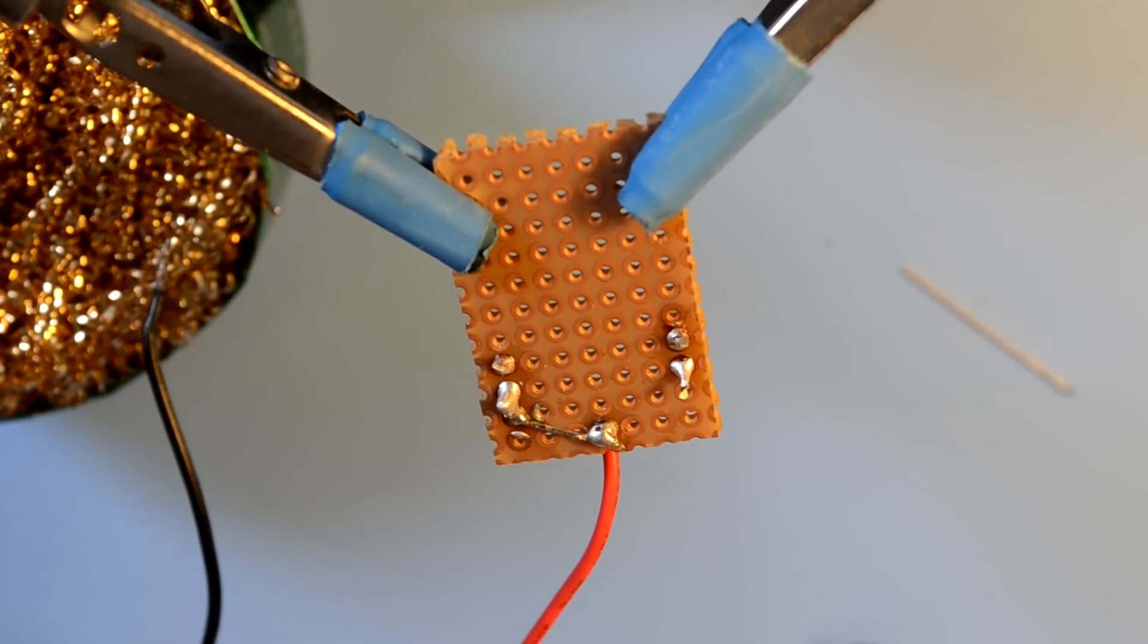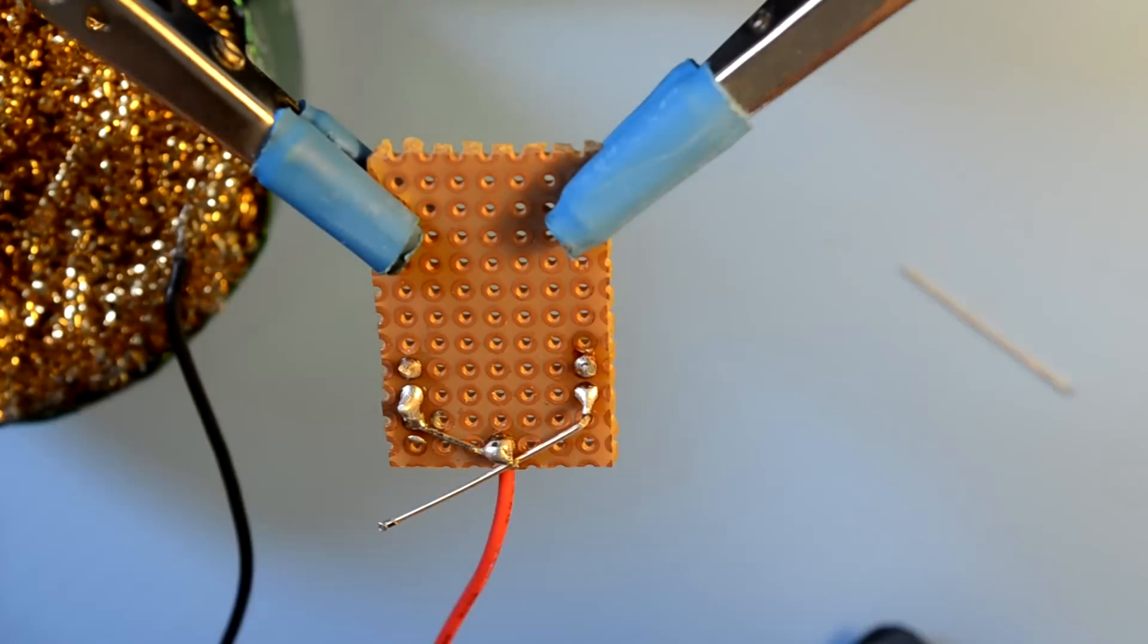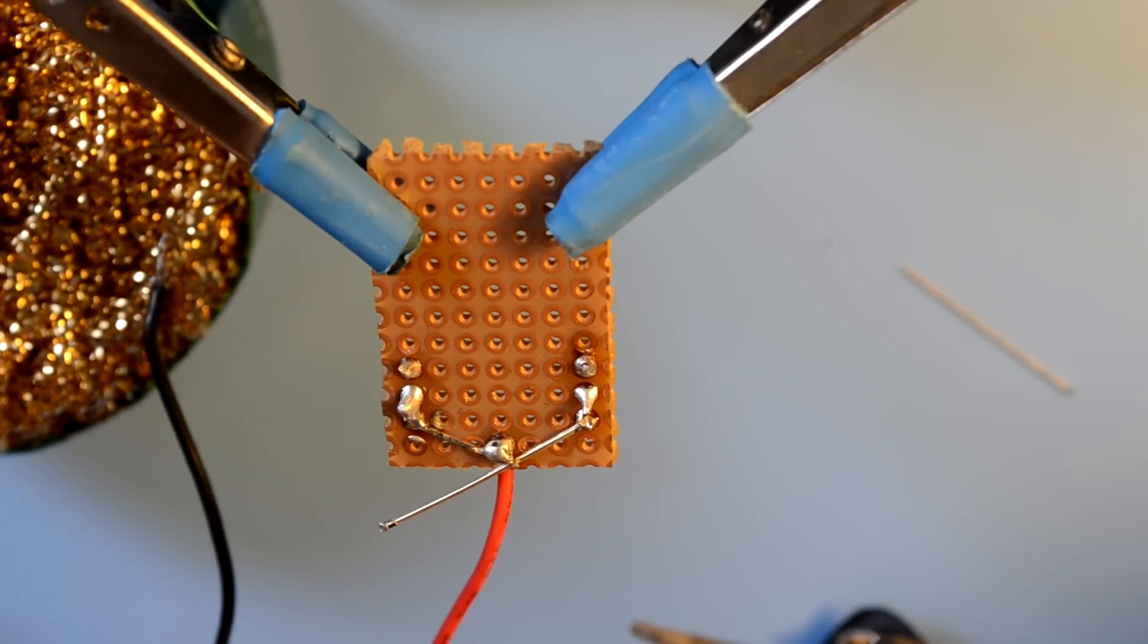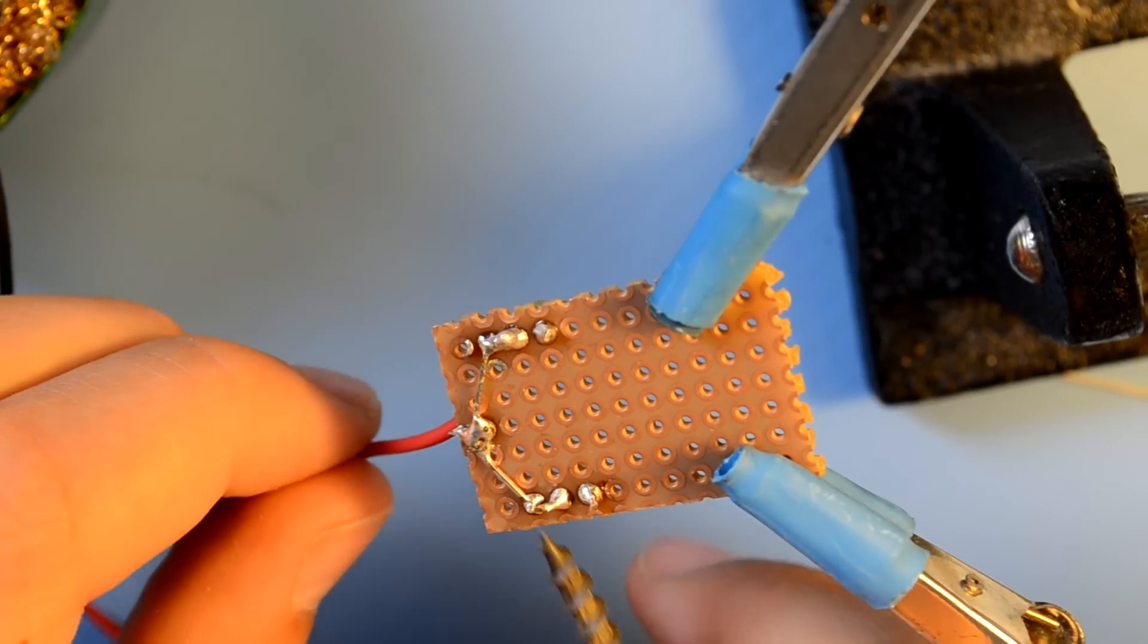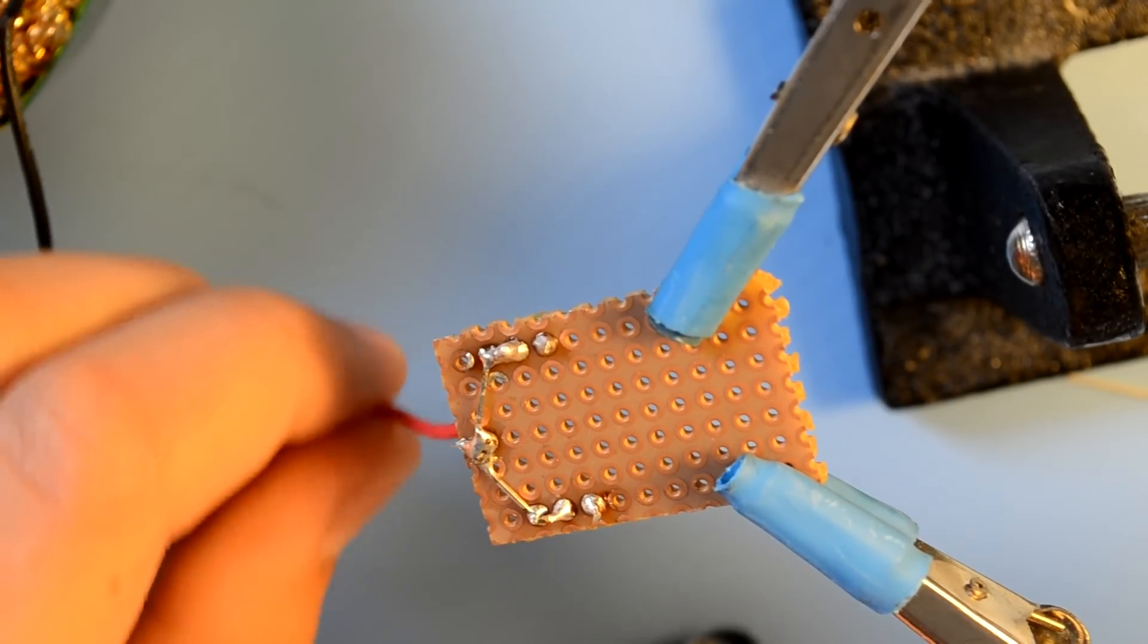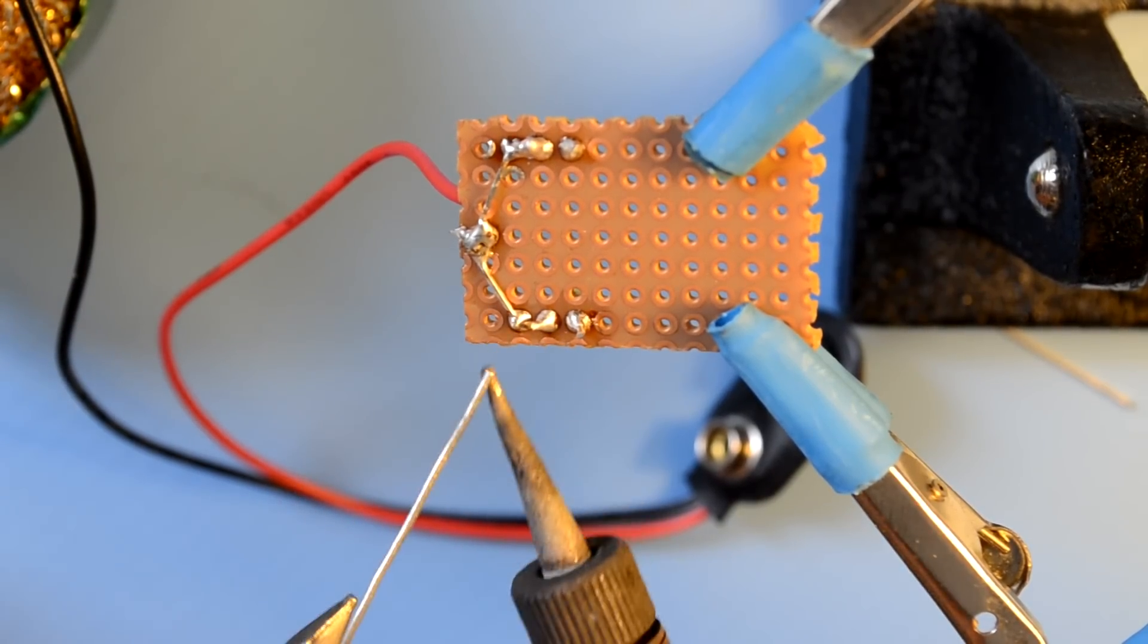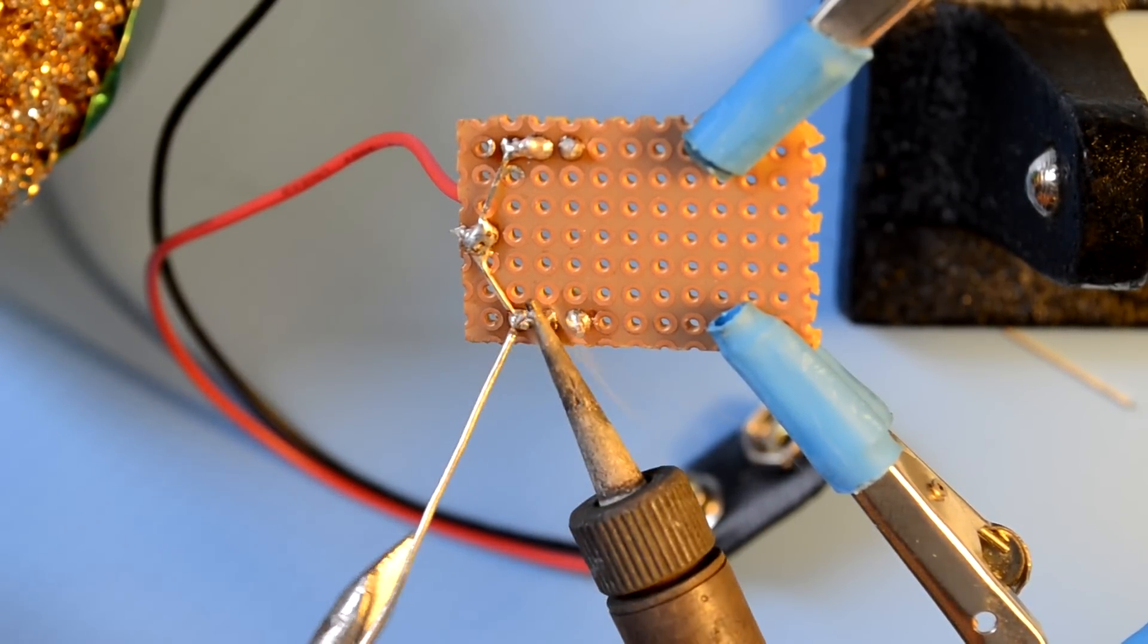So I'll repeat here just so you can see. Between this point and this point, they need to be connected, but they're not. To do this, you're going to take your iron, clean off the tip, tin it, and then apply a ball of solder.